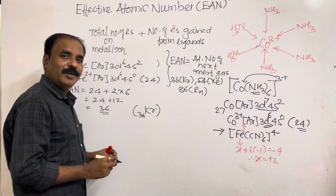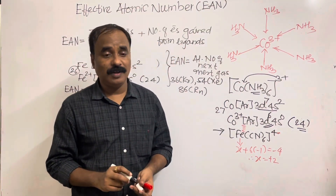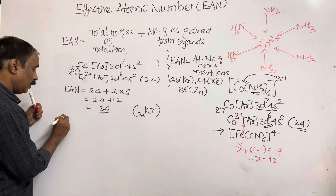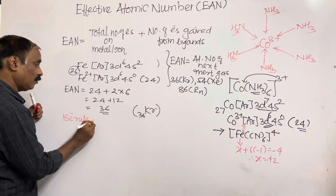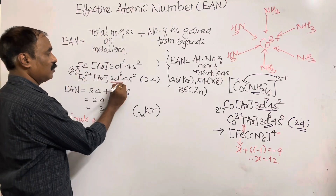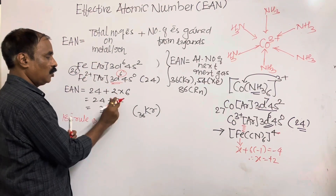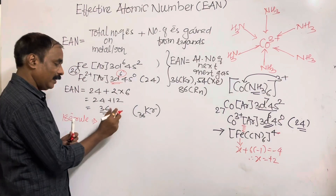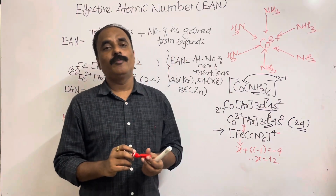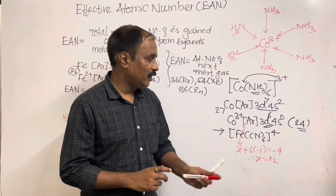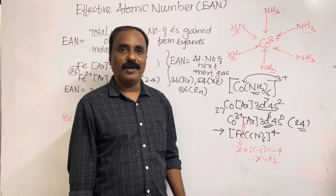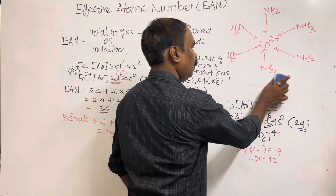This complex obeys the EAN rule (EAN = 36). For the 18-electron rule: Fe²⁺ has 6 valence electrons (3d⁶, 4s⁰), plus 12 electrons from 6 CN⁻ ligands = 18 electrons. It obeys both rules, confirming that hexacyanoferrate(II) is a stable complex.